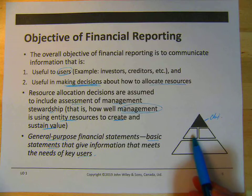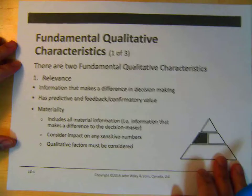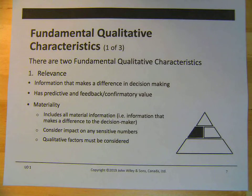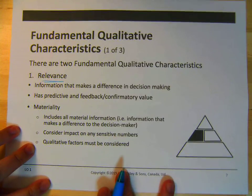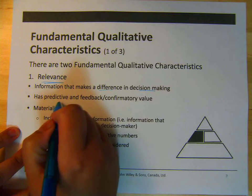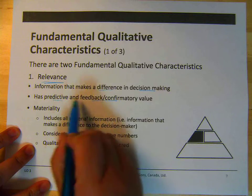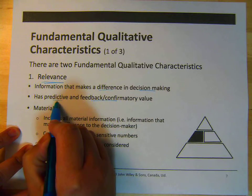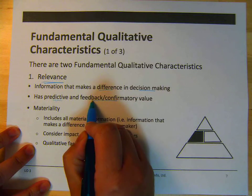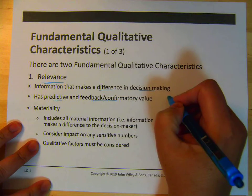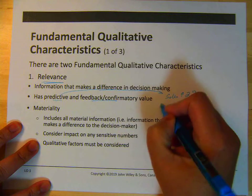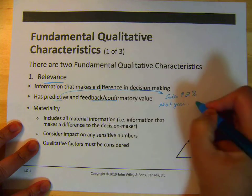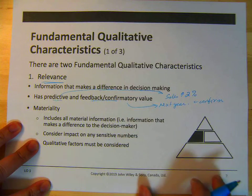Now we're going to move down to the qualitative characteristics on slide 7. There are two fundamental qualitative characteristics: relevance and representational faithfulness. Relevance means it's applicable to decision making — it will make a difference in decision making. It has predictive and feedback value: it can help you predict into the future, and you can test it and get feedback. For example, based on your assessment of a company, you predict sales will increase 2%, and then the next year you can confirm whether it happened or not.